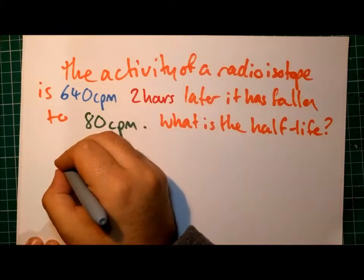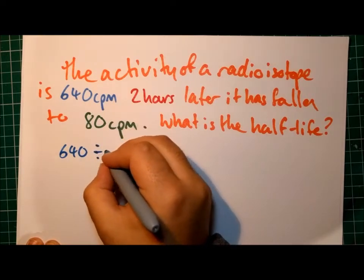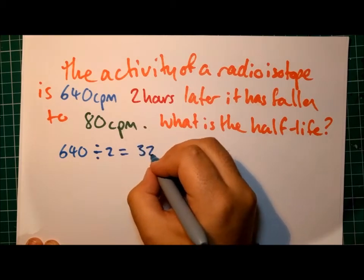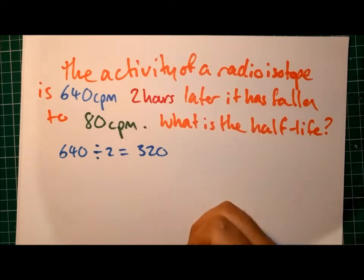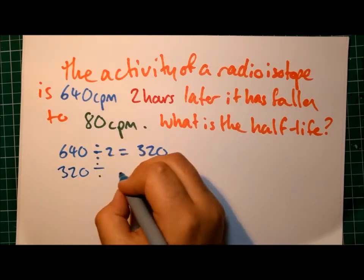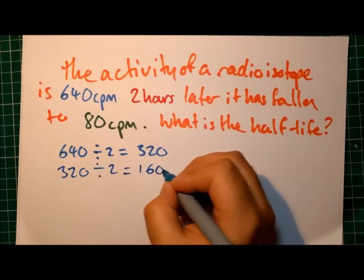After the first half-life, the count rate would be divided by 2, so we would find in this case that it would be 320 counts per minute. So that's the first one. Then the 320, after a second half-life, would also be divided by 2, and we would have a count rate of 160.